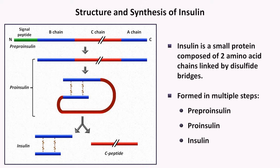Equimolar amounts of insulin and C-peptide are stored in secretory granules and eventually released together. Therefore, C-peptide can serve as an important surrogate for insulin secretion. This is particularly true in situations where one must distinguish between a patient who has excessive endogenous insulin, as with an insulin-producing tumor — in which case C-peptide levels will also be high — versus excessive exogenous insulin, as seen in factitious hypoglycemia, in which case C-peptide levels will be very low.